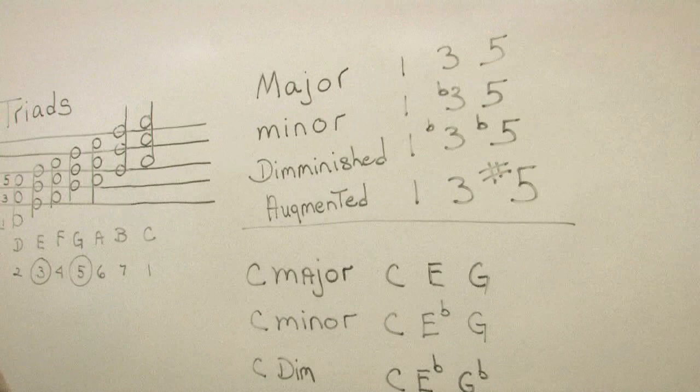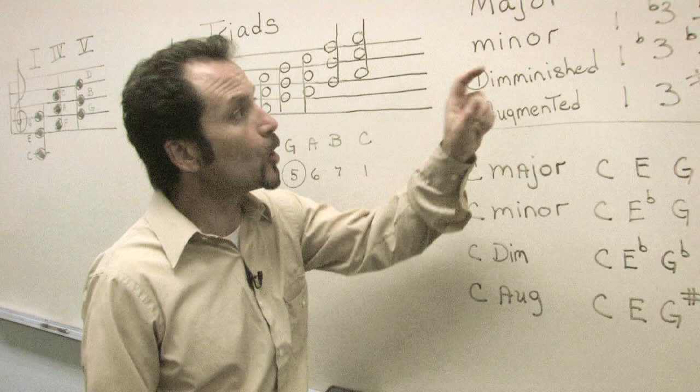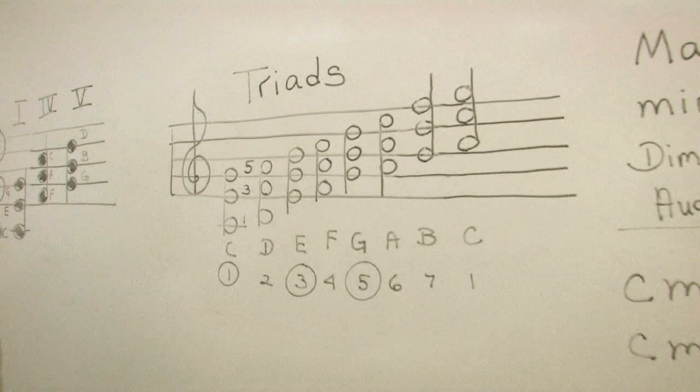Now a triad, you will use every other one in the scale. It will always be 1-3-5. So if you come back here to the C major scale, triads are always 1-3-5 of the chord.